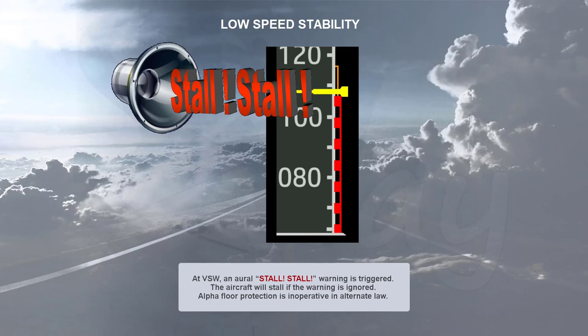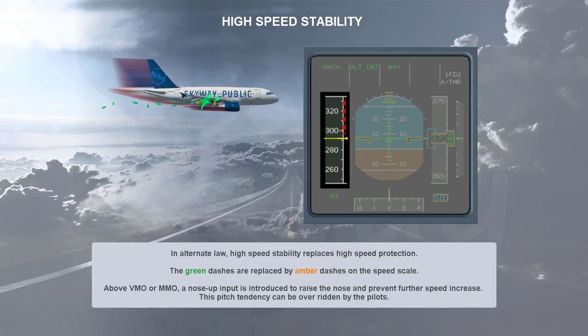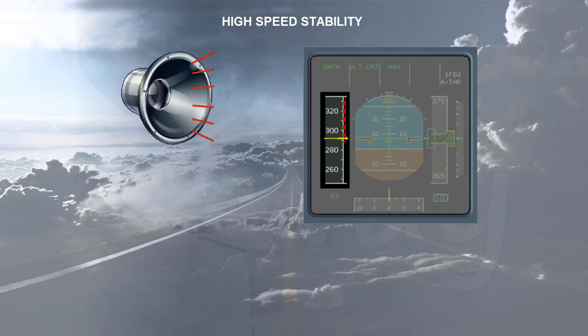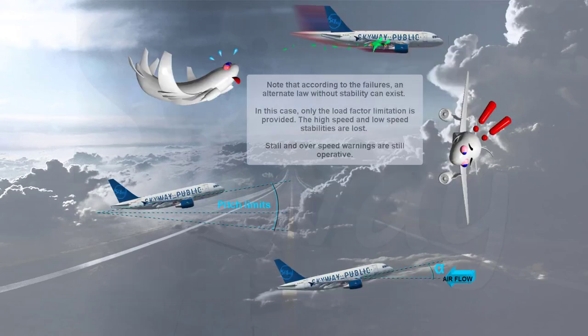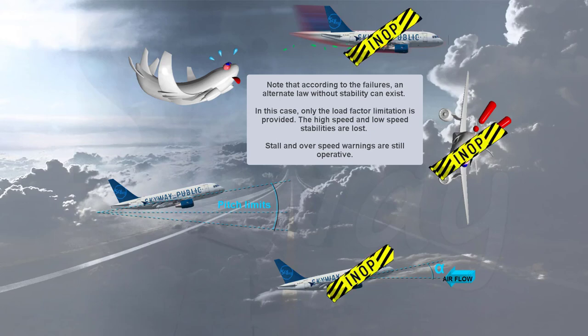Alpha floor protection is inoperative in alternate law. In alternate law, high speed stability replaces high speed protection. The green dashes are replaced by amber dashes on the speed scale. Above VMO or MMO, a nose-up input is introduced to raise the nose and prevent further speed increase, though this pitch tendency can be overridden by the pilots. As in normal law, if VMO/MMO is exceeded the overspeed warning is triggered. Note that depending on the failures, an alternate law without stability can exist — in this case only the load factor limitation is provided, and the high speed and low speed stabilities are lost, though stall and overspeed warnings remain operative.